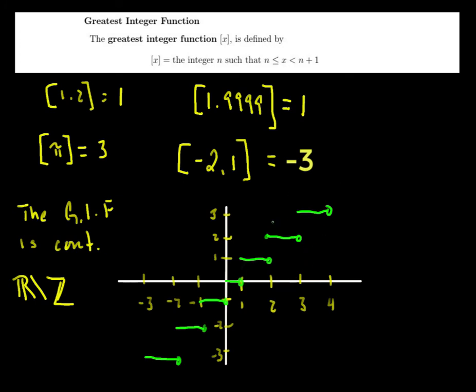However, the derivative does exist everywhere else. And hopefully the graph is obvious to you that the derivative would be 0 everywhere. And it doesn't exist at the integers. So again, we'll come back to this greatest integer function when we look at integrals. But this is our first introduction to this idea.